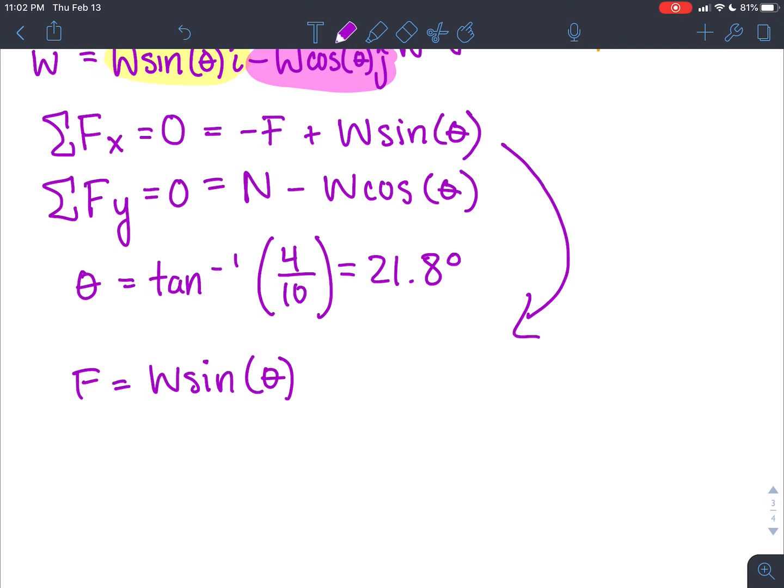And then if we look at our summation of forces in the y, we get, we can move this over to the other side, and that will give us N equals W cosine of theta.